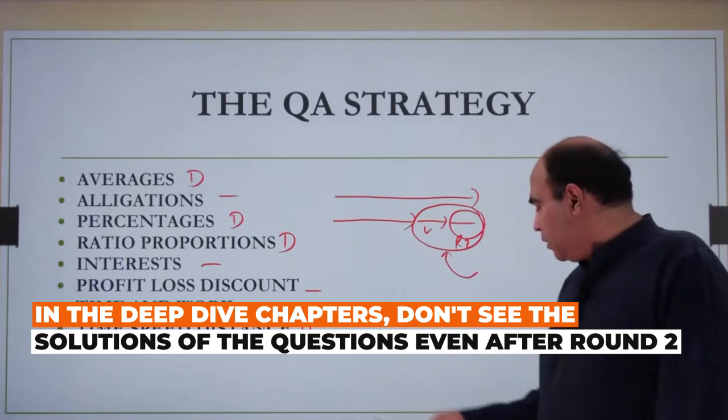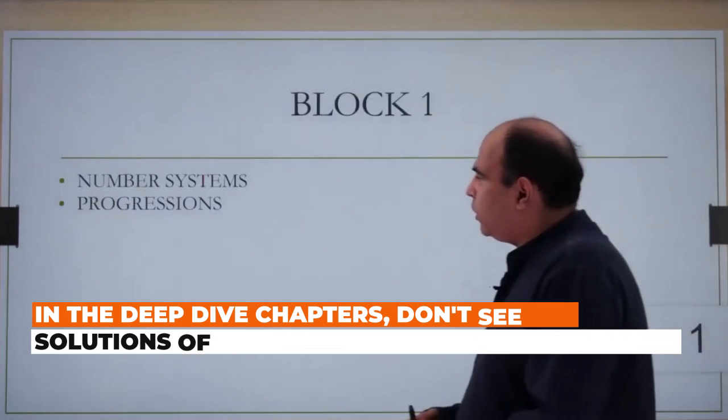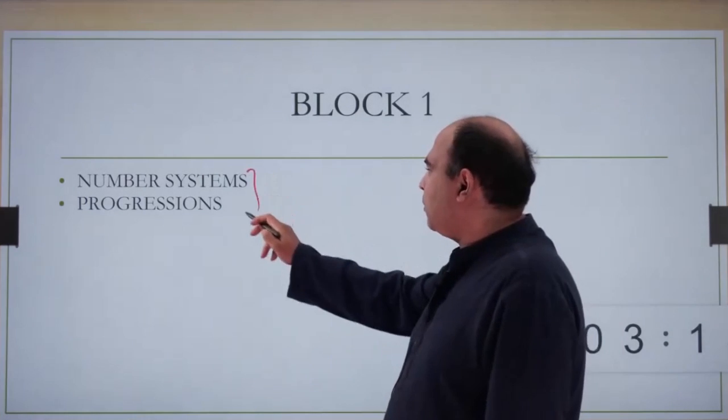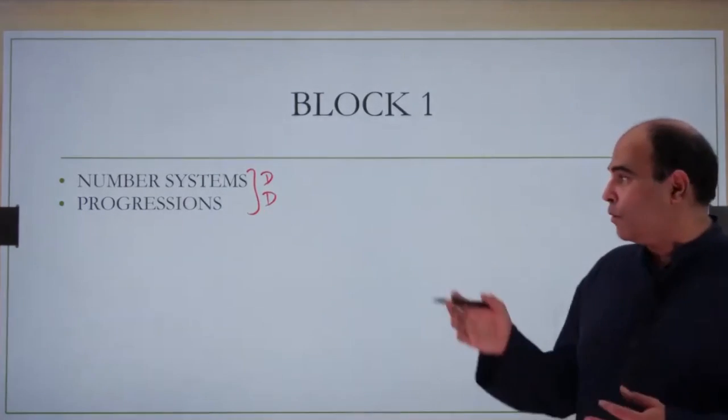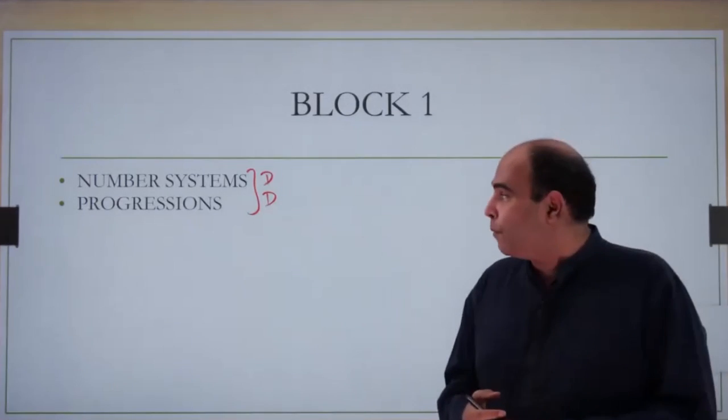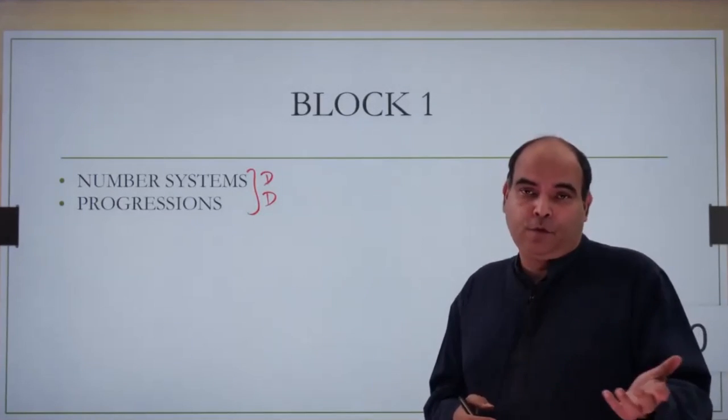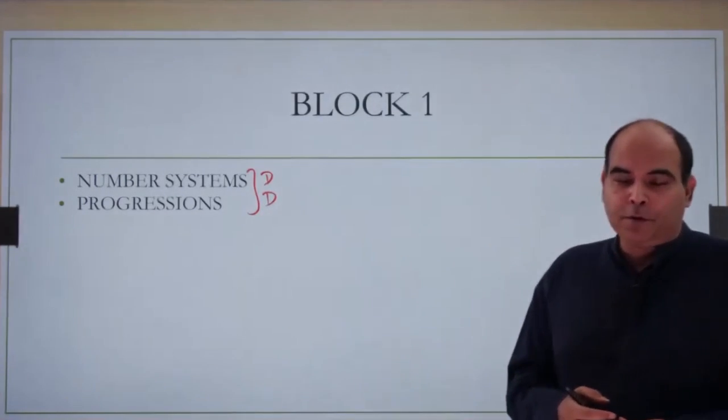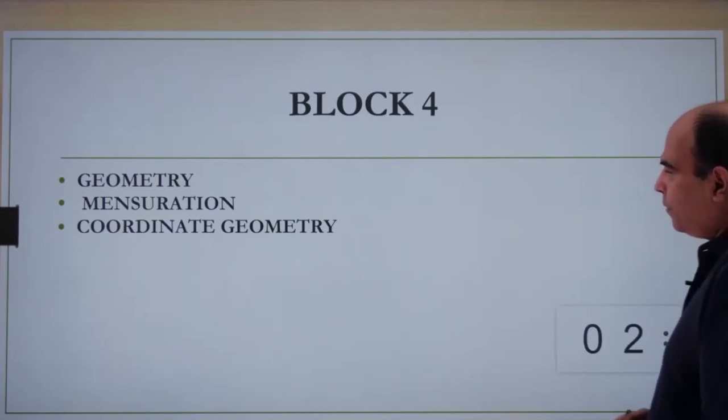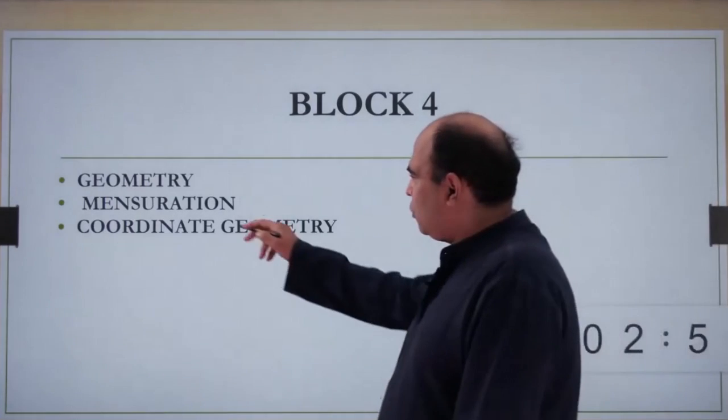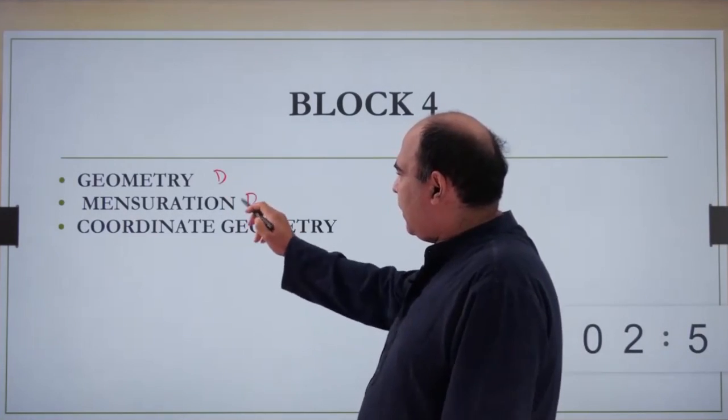This is as far as Block 2-3 goes. Block 1, where both these chapters are deep dive because you will see a lot of questions on this—you have around seven to eight questions normally from Block 1, and four questions from a chapter will obviously make the chapter important. Number systems is a very deep chapter. Block 4, where the deep dive chapter is geometry.